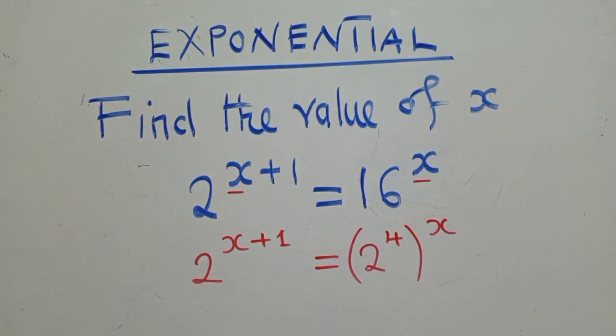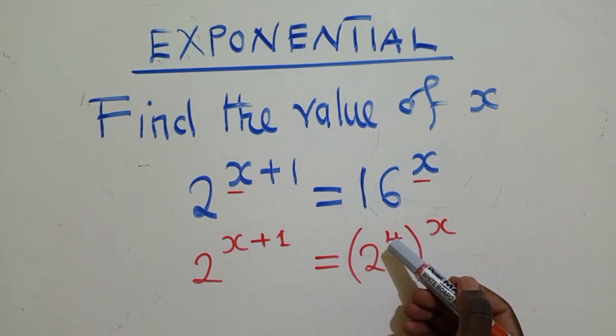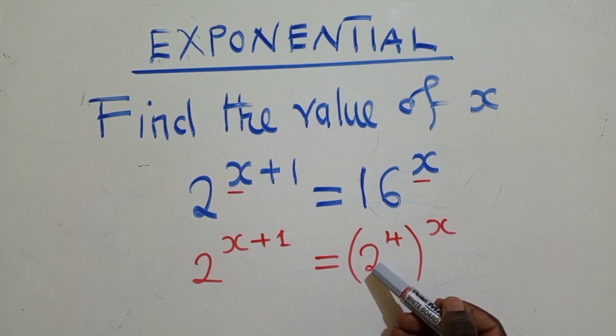Okay, if you have been following the laws of indices, you discover that 2 to the power 4 is the same as 16. You can see the index, which is here, it's a 4. That means you need to multiply 2 by itself 4 times and it will give us 16.